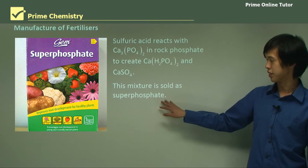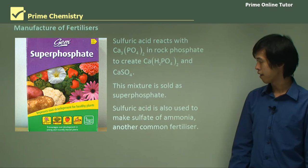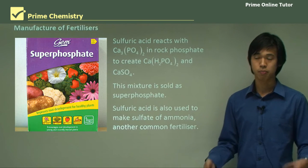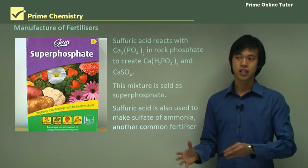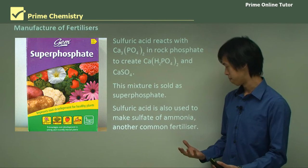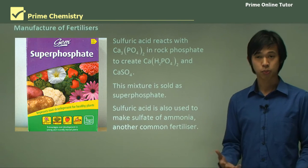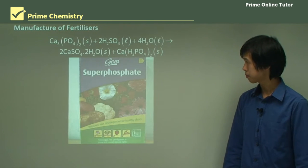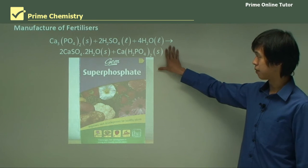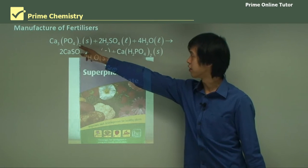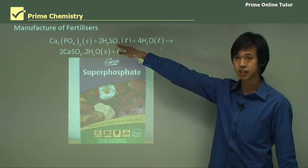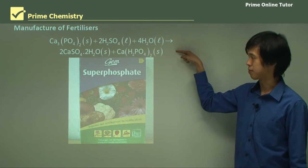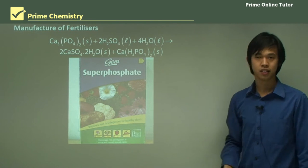This mixture is sold as superphosphate. Sulfuric acid is also used to make sulfate of ammonia, another common fertilizer — when we mix sulfuric acid and ammonia, the ammonia absorbs some H⁺ and produces ammonium sulfate. The superphosphate equation shows rock phosphate reacting with sulfuric acid to produce water, superphosphate, and calcium sulfate, which goes into our fertilizer.